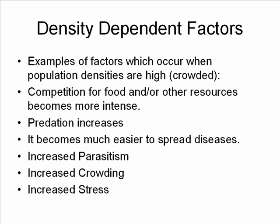Examples of density-dependent factors — those which affect crowded populations more — include: when a population becomes more crowded, competition for food and other resources becomes more intense; predation increases; it becomes much easier to spread diseases because organisms are near each other; parasites spread more easily; and there is increased stress within the population due to crowding.